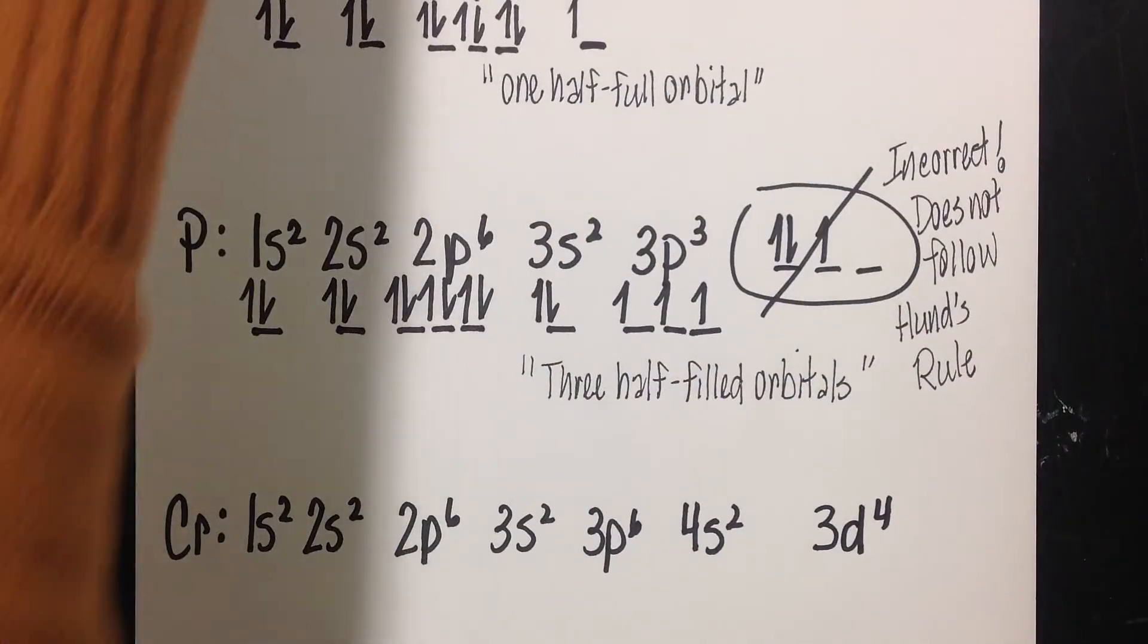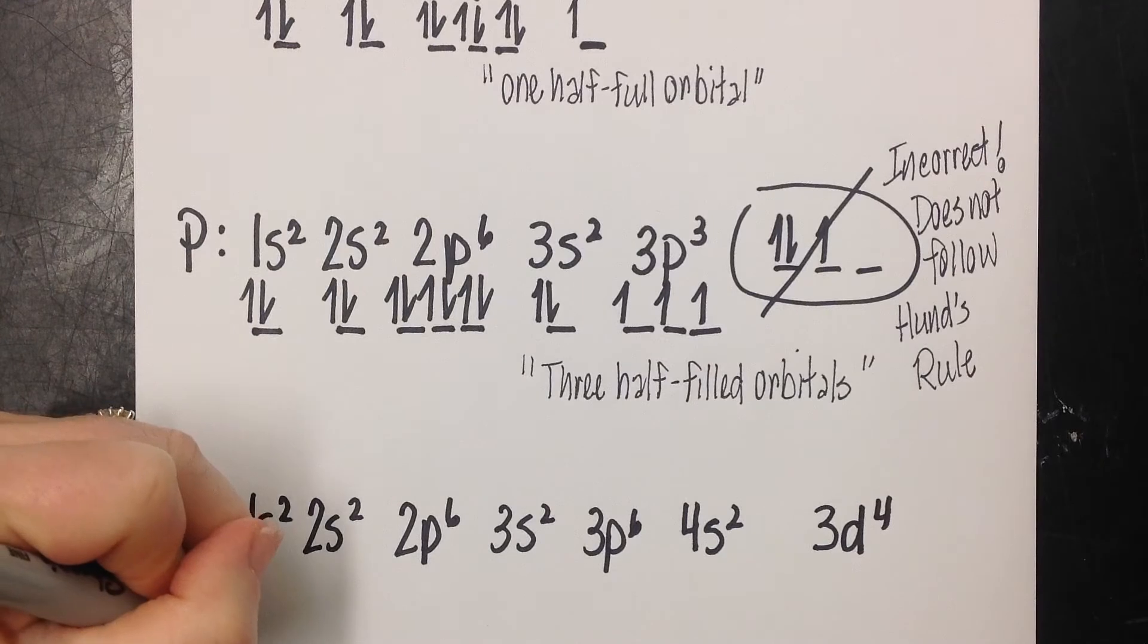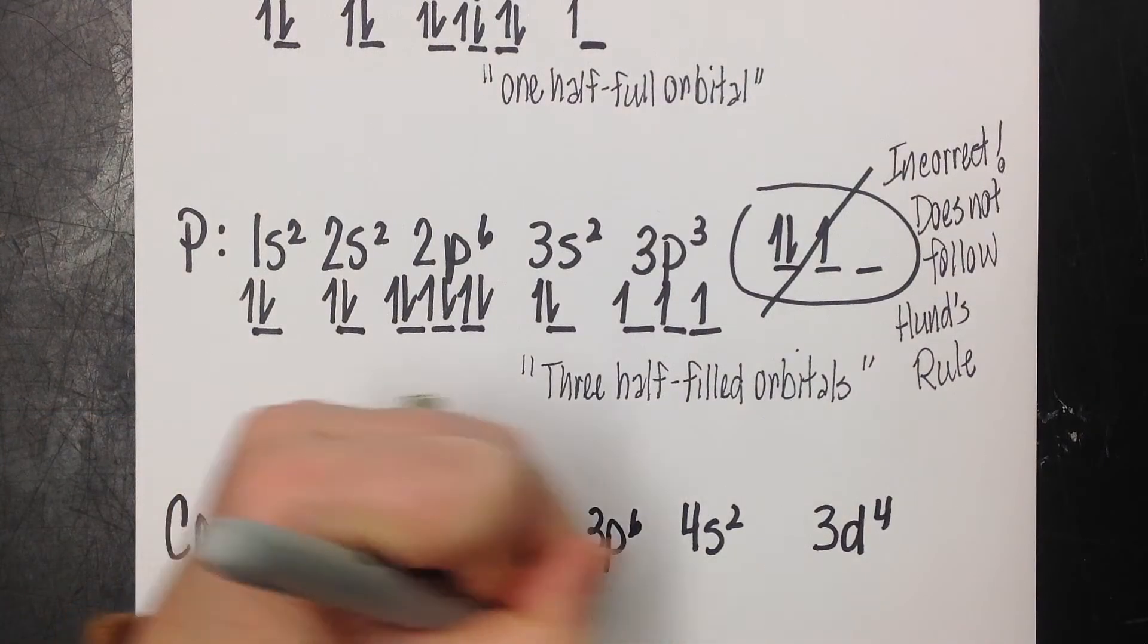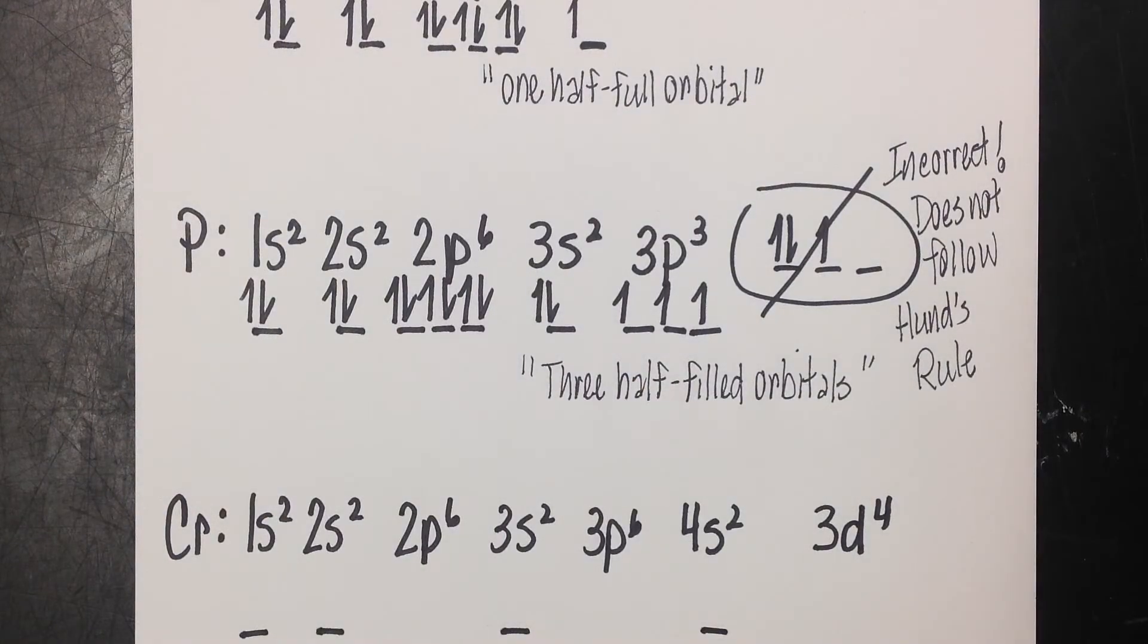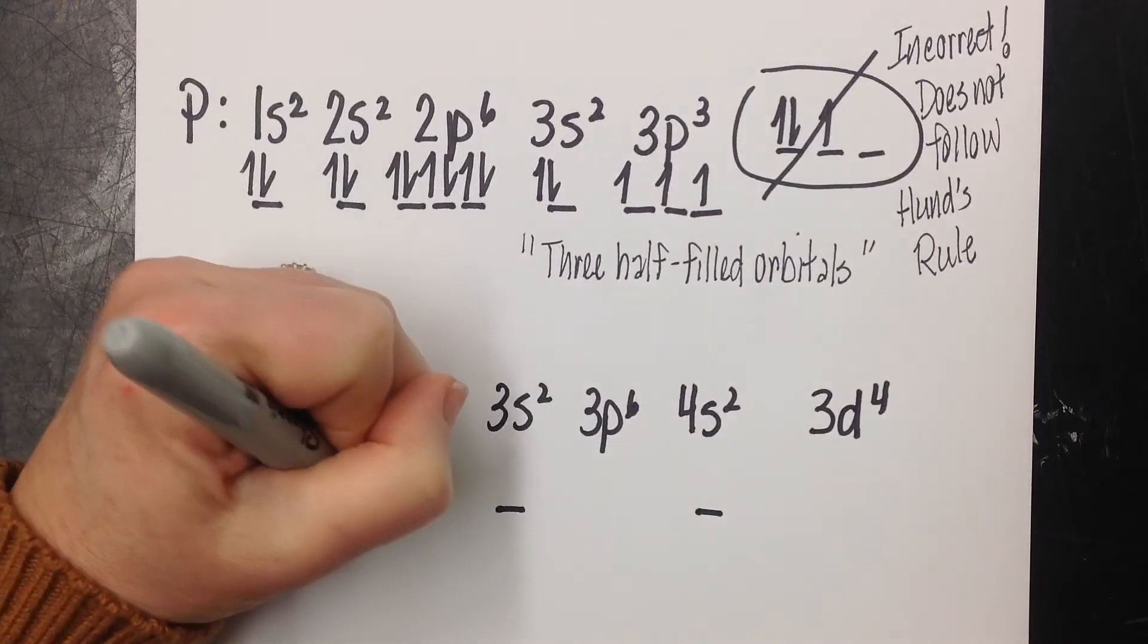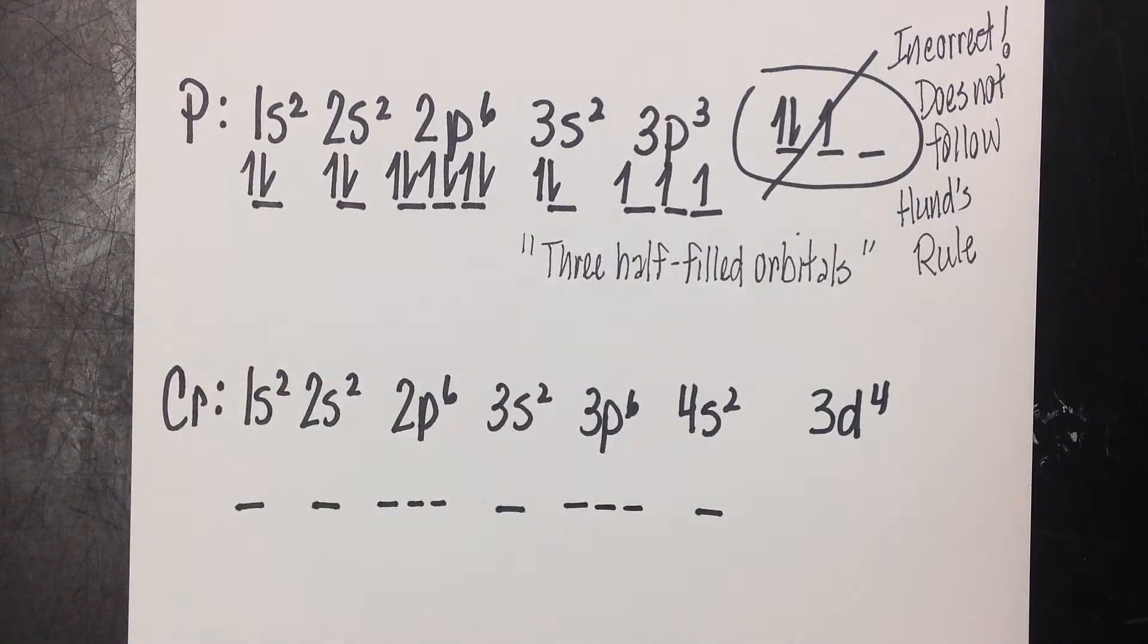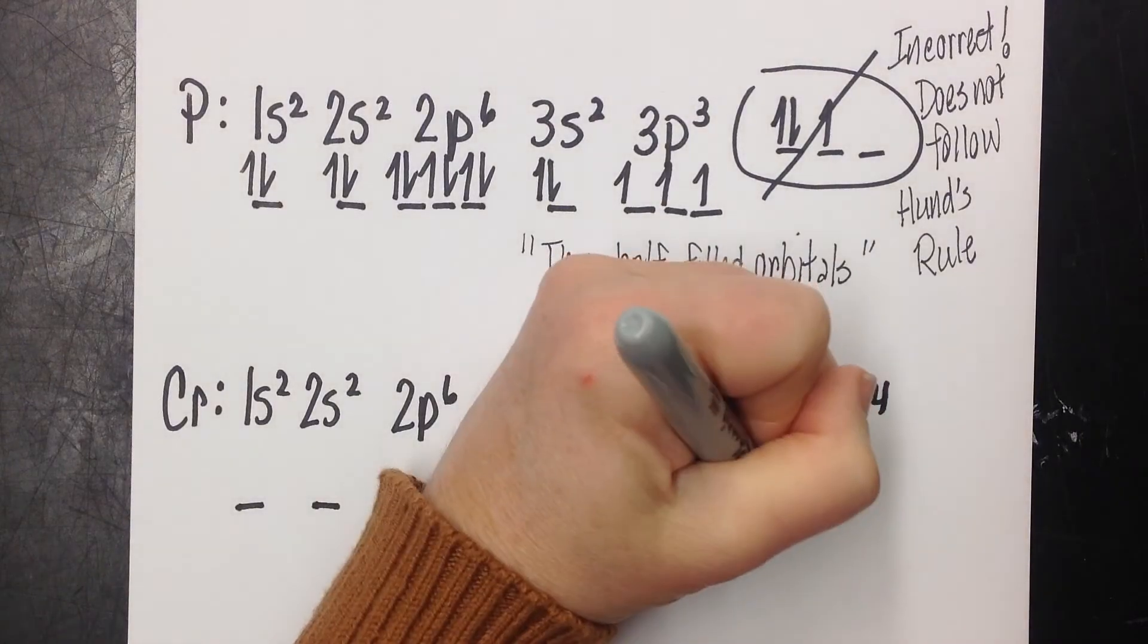So now we're ready to go back and do our orbital notation. So all of the S sublevels are going to have one orbital. And remember, D can hold a maximum of 10 electrons, and since 2 electrons can fit in one space, we're going to need 5.